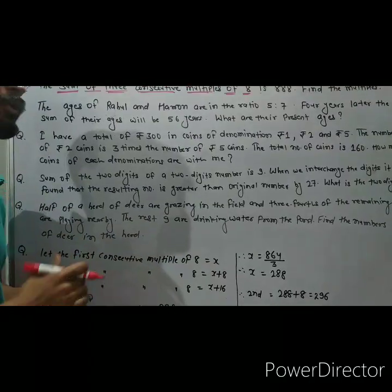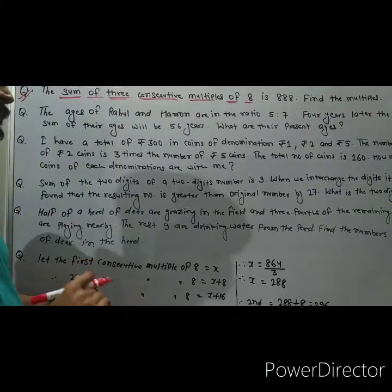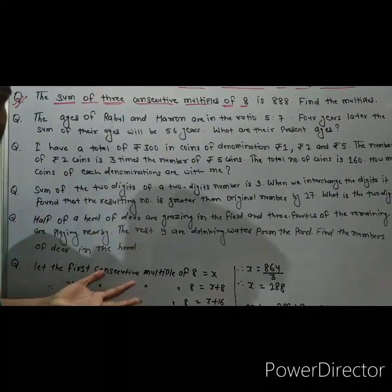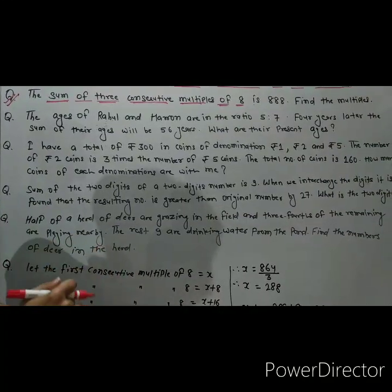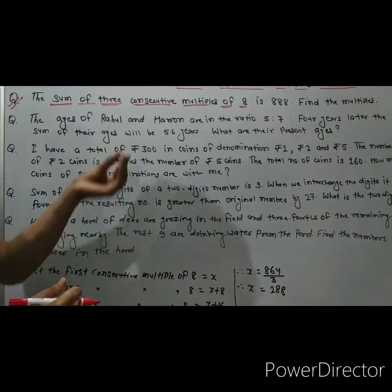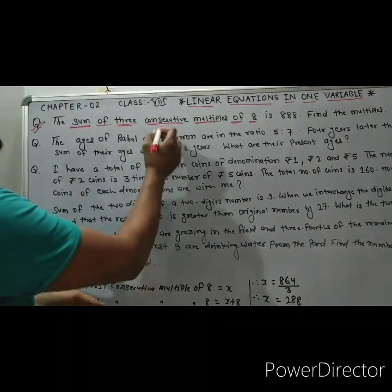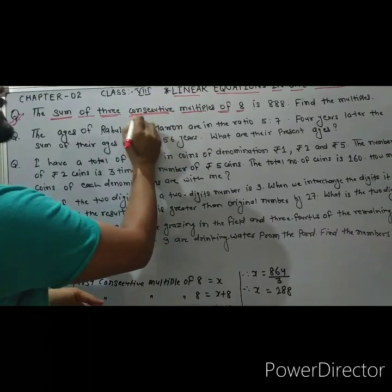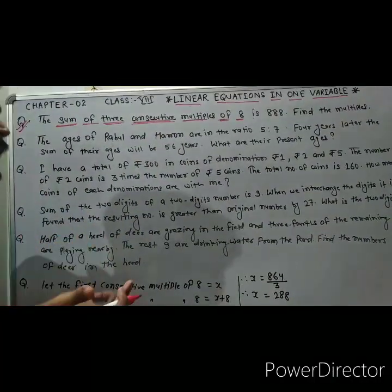Some of you know what is the meaning of multiples — multiples means table. But here you have 3 consecutive multiples. Consecutive means lagatar, meaning one after another.